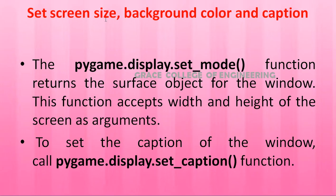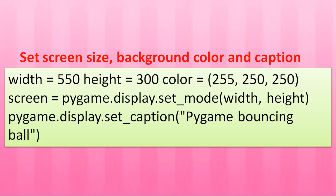Next, set the screen size, background color, and caption. We use pygame.display.set_mode() with the width and height as arguments. To set the caption, use pygame.display.set_caption(). In this program: width = 550, height = 300, color = (255, 250, 250). Then screen = pygame.display.set_mode((width, height)) to display a window of the desired size. The caption is set to 'Pygame Bouncing Ball'.